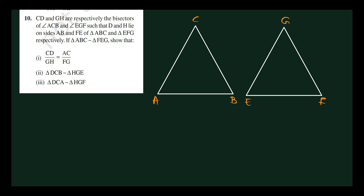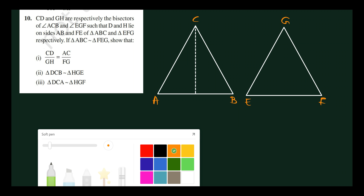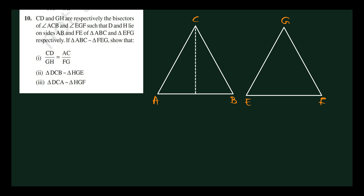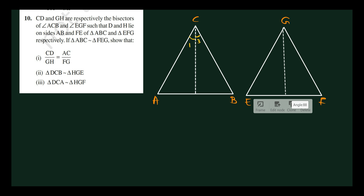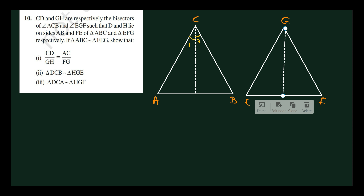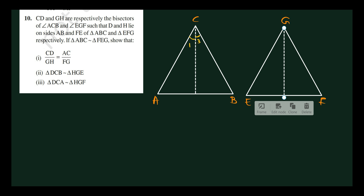CD and GH are the bisectors of angle ACB and angle EGF respectively. The bisector divides the angle into two equal parts — angle 1 and angle 3 here, and angle 2 and angle 4 there.